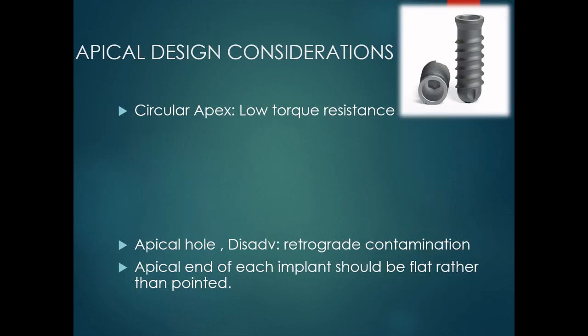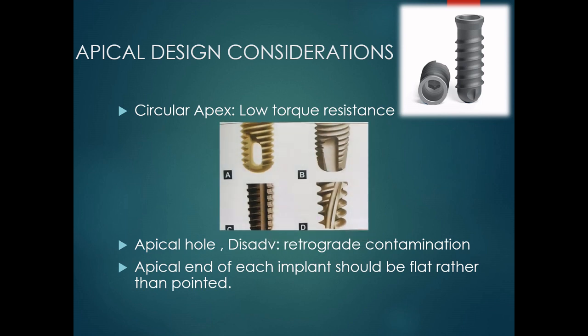Let us discuss the apical design of implants. Round cross-sectional implants do not resist torsional shear forces when abutment screws are tightened — those with a circular apex have low torque resistance. Hence anti-rotational features are incorporated usually in the apical region of the implant body, including vents, holes, and grooves. Bone can grow through these apical holes and they resist torsional loads. Apical vents also increase the surface area available to transmit compressive loads to the bone.